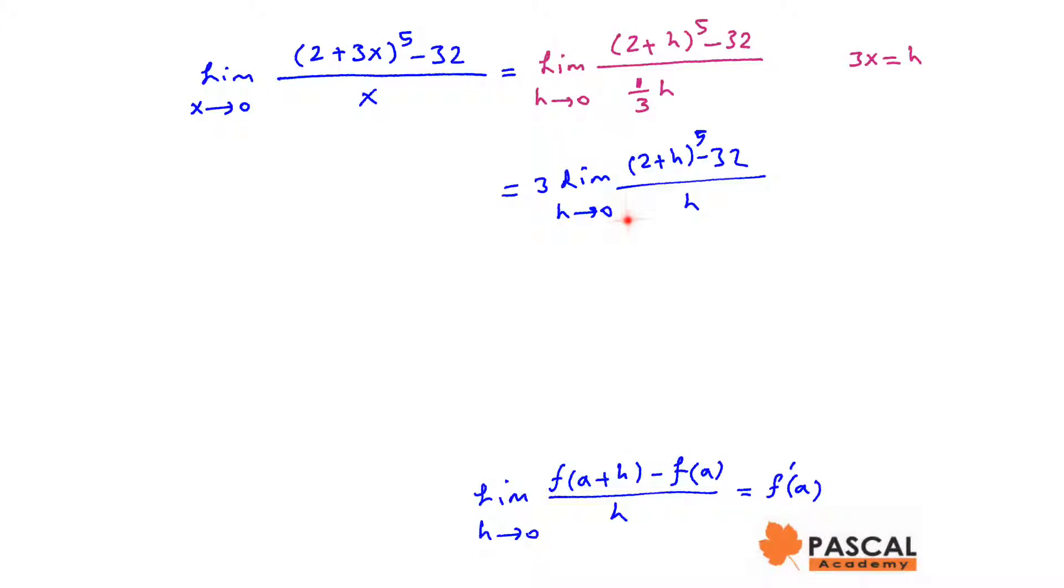By comparing this limit and the definition of the derivative, we'll see the given limit is derivative of f of x equals 3x to the power of 5 at x equals 2.